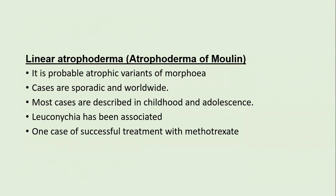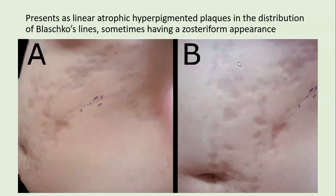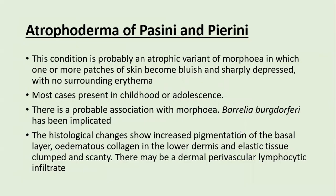Linear atrophoderma, also known as atrophoderma of Moulin, is probably an atrophic variant of morphea. Cases are sporadic and worldwide. Most cases are seen in childhood and adolescence; leuconychia is associated, and it is successfully treated with methotrexate. Lesions appear as linear atrophic plaques in the distribution of Blaschko lines, sometimes with a zosteriform appearance.